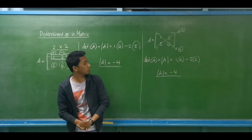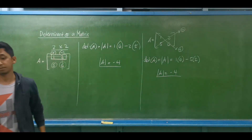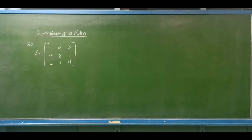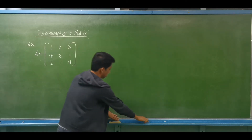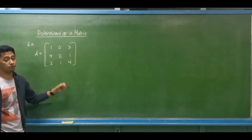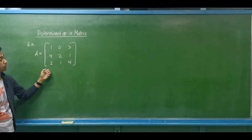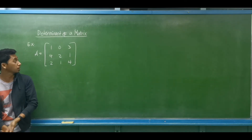Take note that the basket-weave method or diagonal method is only applicable for a 2 by 2 matrix and a 3 by 3 matrix. So let us now try a 3 by 3 matrix. This is matrix A and we have to compute for the determinant.